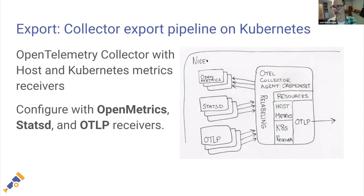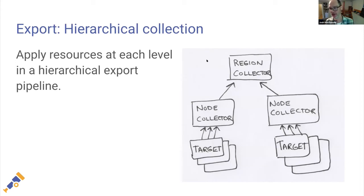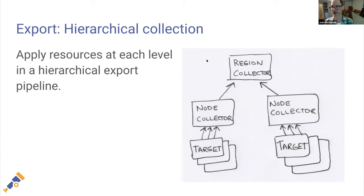Part of the resource model is implementing hierarchical collection: a node collector collects all the metrics locally and passes them to a regional collector that attaches all your regional resource attributes, which might pass to a global or other levels of hierarchy to organize your metrics data. This is something that may allow you to bypass certain Prometheus features — if you're using Prometheus recording rules for some functionality, you can talk about an export pipeline that aggregates everything into one place without that type of write-time aggregation.